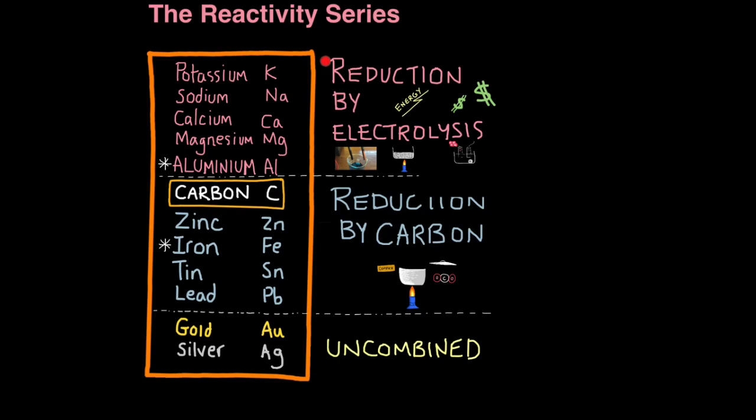So this comes up quite a lot in exams, and can even be the basis of a six-mark question. For example, it might ask you, why do you use different techniques to separate iron from its ore and aluminium from its ore? So just remember, iron is less reactive than carbon, so it can be reduced by carbon. In that reaction, the iron oxide is heated with carbon, and that will produce pure iron and carbon dioxide.